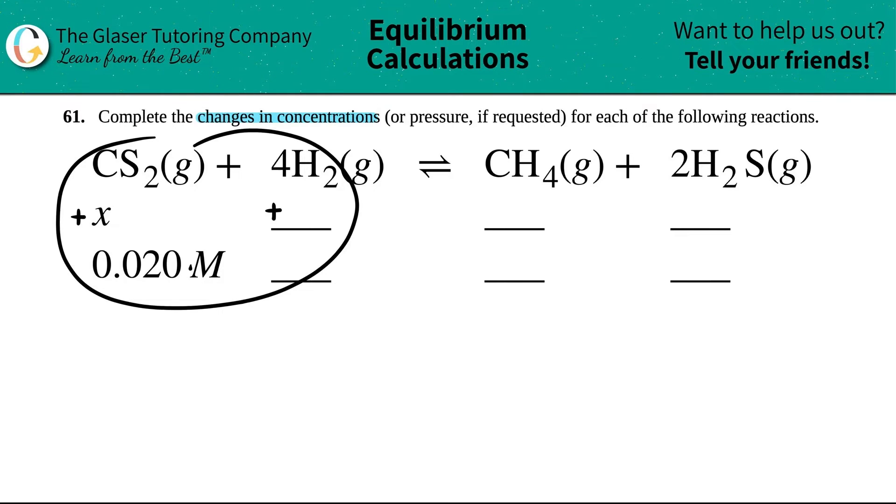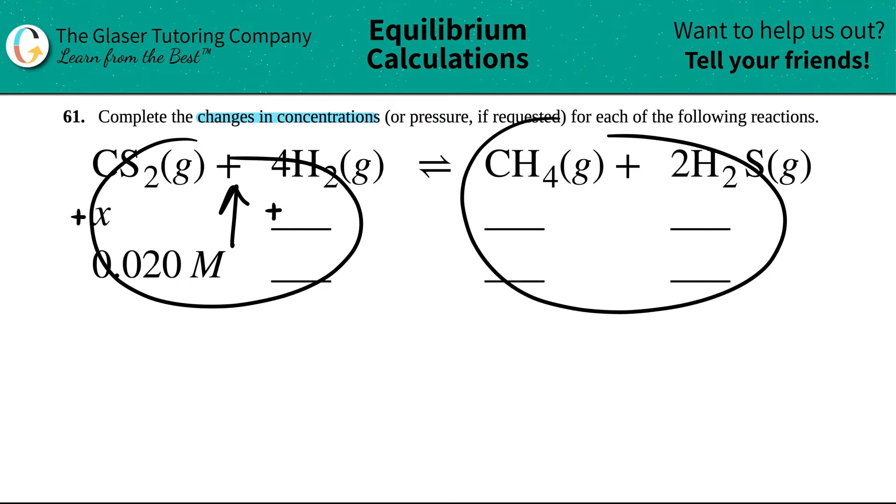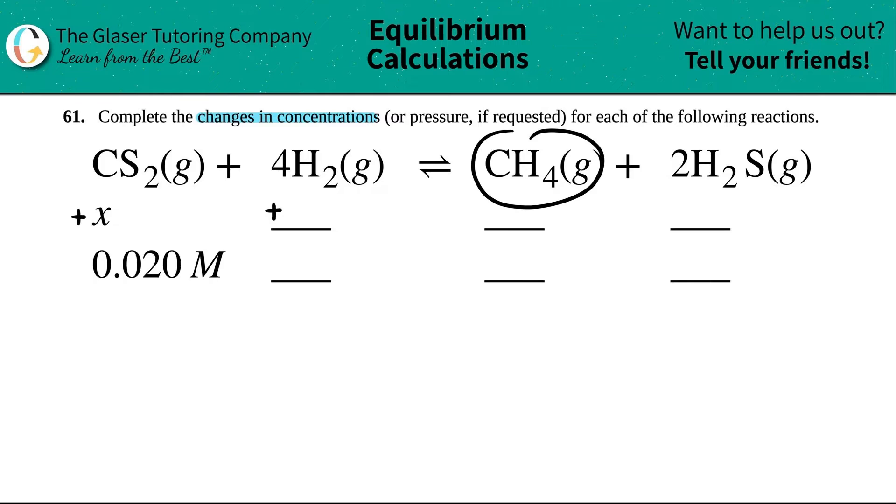And now if all of the reactants are increasing, what's going to happen to all of the products? Well, if the reactants all go up, the products have to go down. So you can't all increase the whole system or decrease the whole system. One side is increasing, the other side has to decrease. So I know that these two values for CH4 and H2S, these are minus going down.